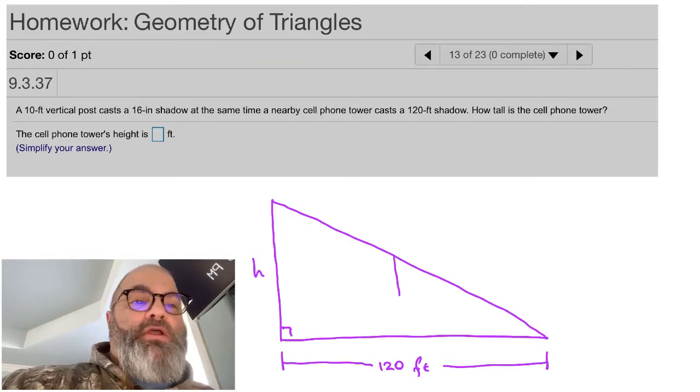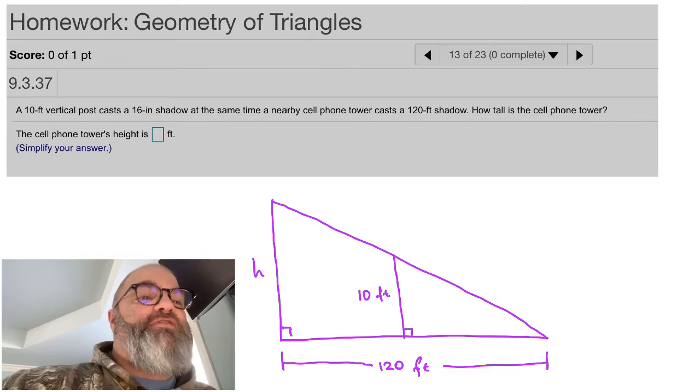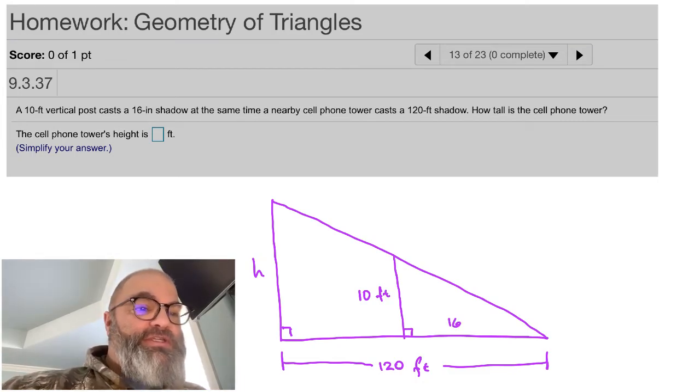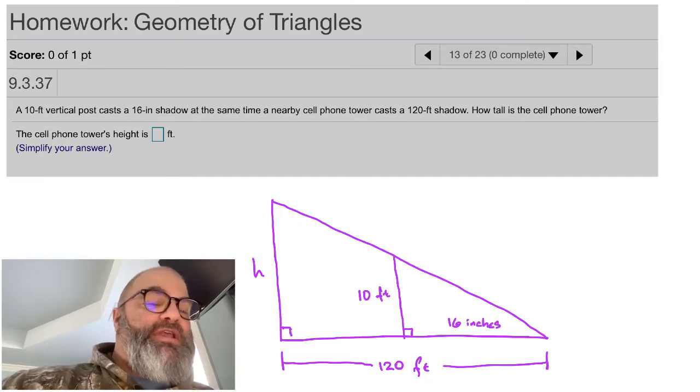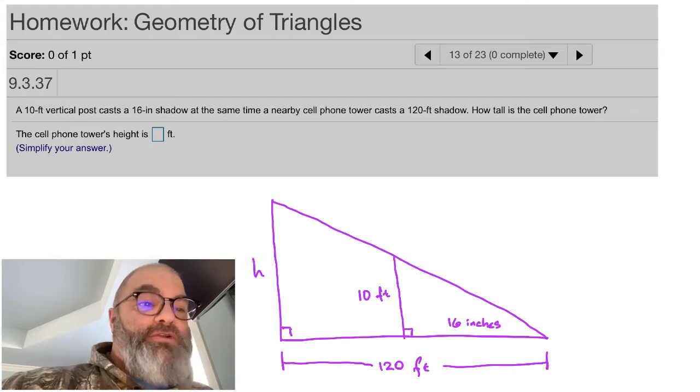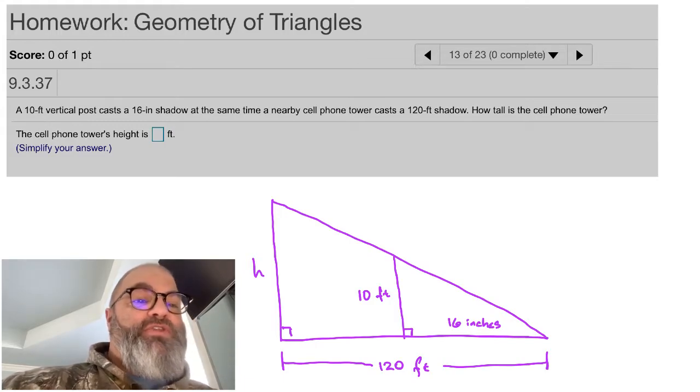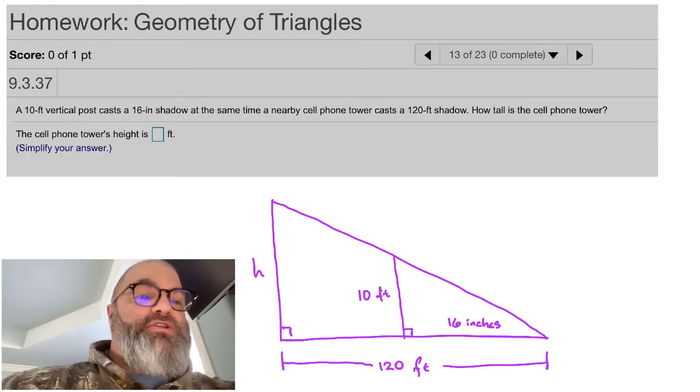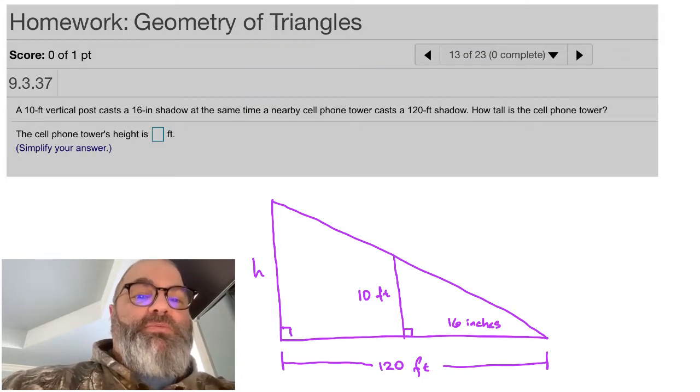Then we come in here, and we have a vertical post, and that vertical post is going to have a height of 10 feet to it. Then the shadow for the vertical post is just going to be 16 inches. Now, here's the thing that tells us our units are not the same. So now we need to come in and actually do that conversion to convert that 16 inches into feet, so that all of our units are going to be the same.